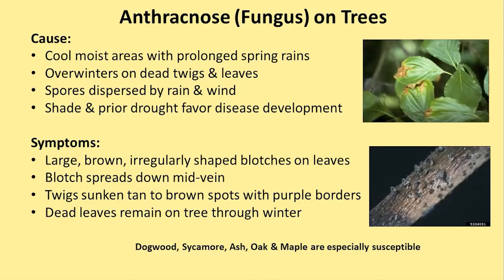The symptoms of anthracnose are large, brown, irregular-shaped blotches on the leaves. One way to identify it is that the blotch spreads down the mid vein, starting at the tip. On twigs, you will see sunken parts that are tan to brown with little purple borders around them. If you have a tree that normally loses its leaves in winter but the dead leaves stay on the tree and don't fall off, you probably have anthracnose.